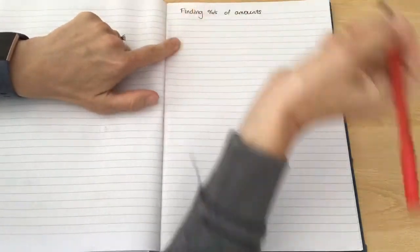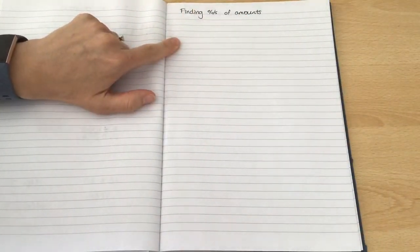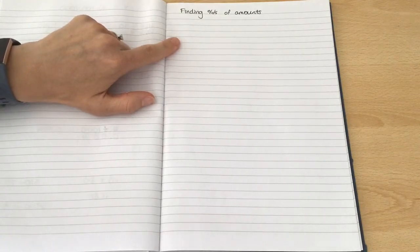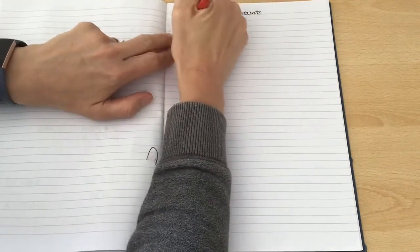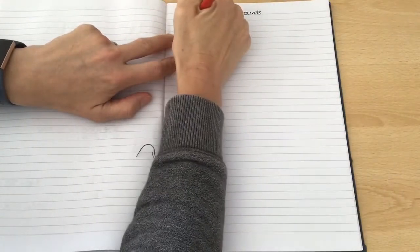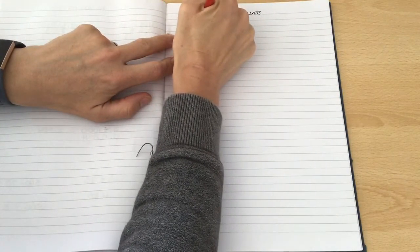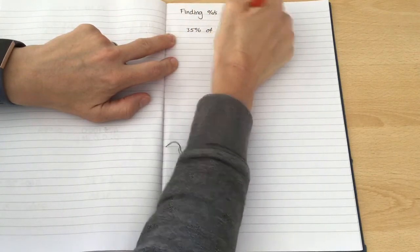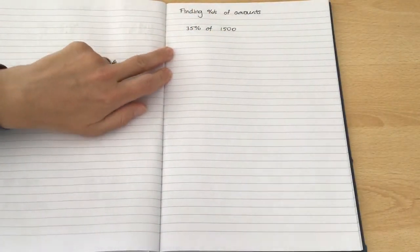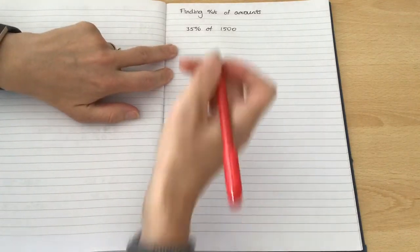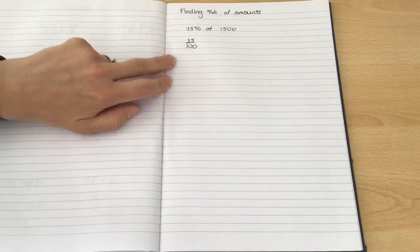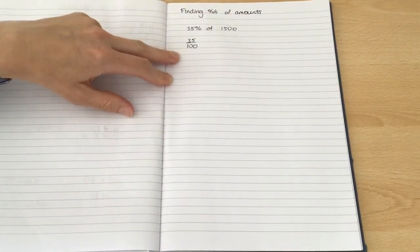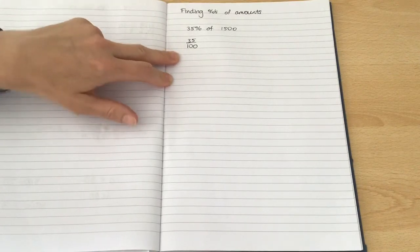So let's start off with the method that is the foolproof method for finding any percentage of any amount. I'm going to start with how to find 35% of 1500. So let's remember that percentage actually means out of 100. So the first thing we're going to do is we're going to express 35% as a fraction: 35 out of 100 is our 35%.